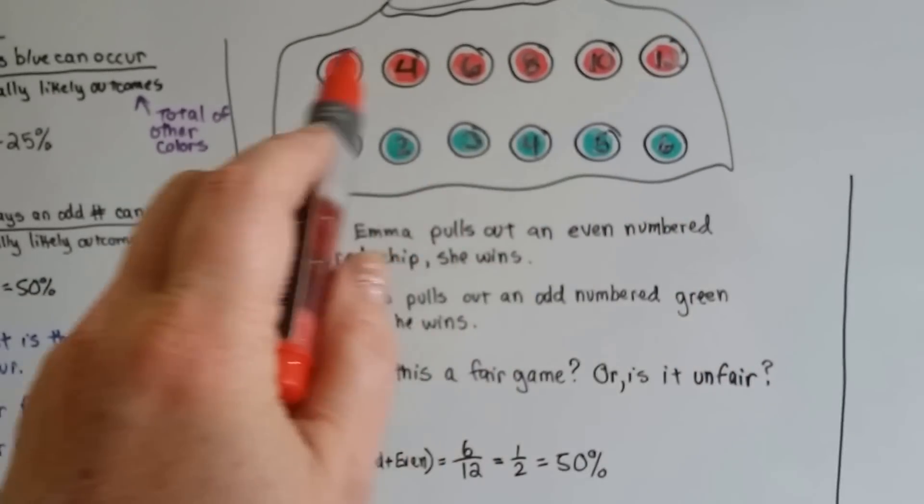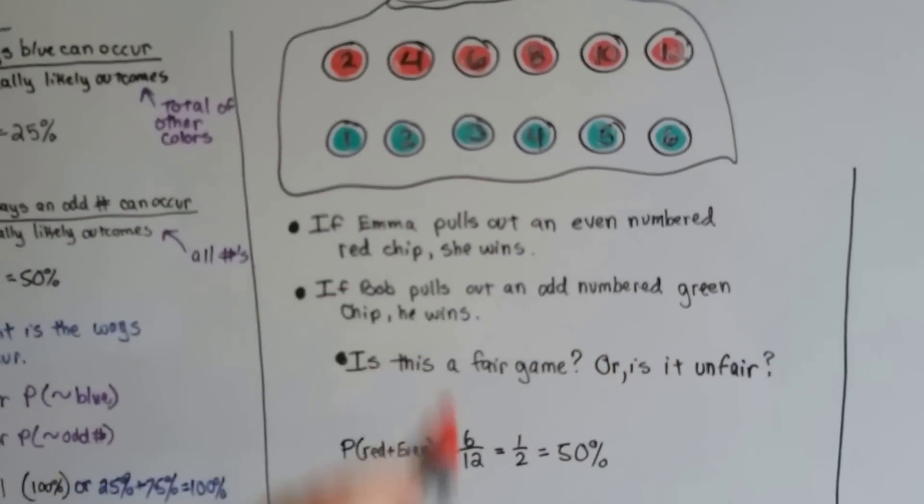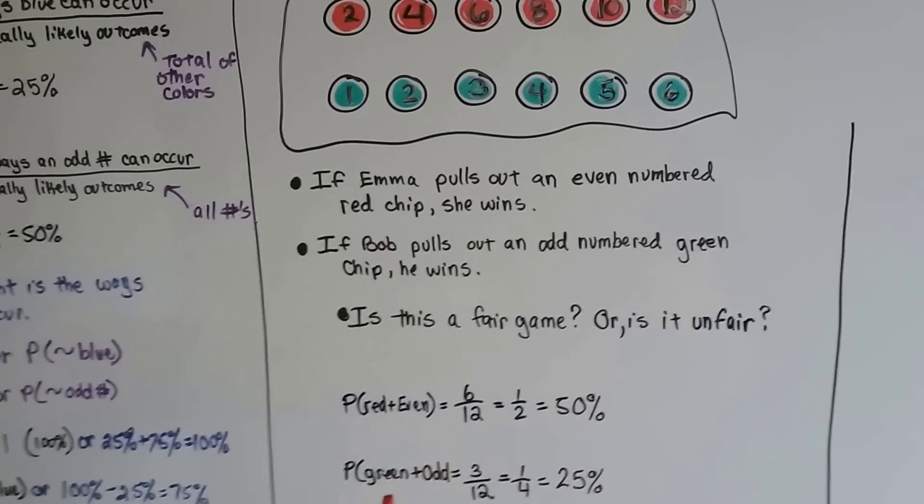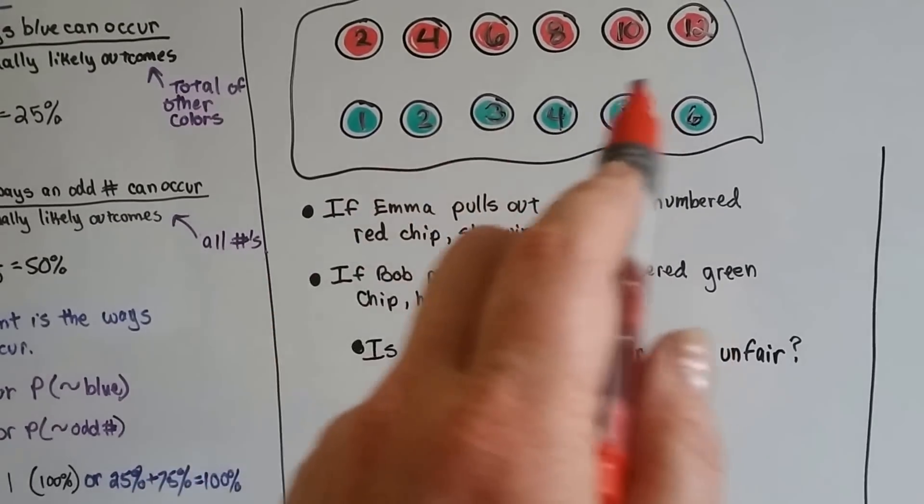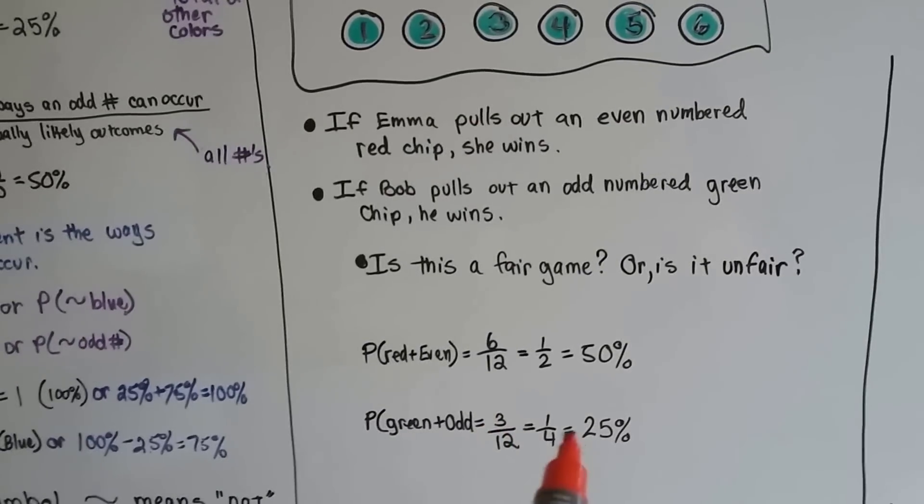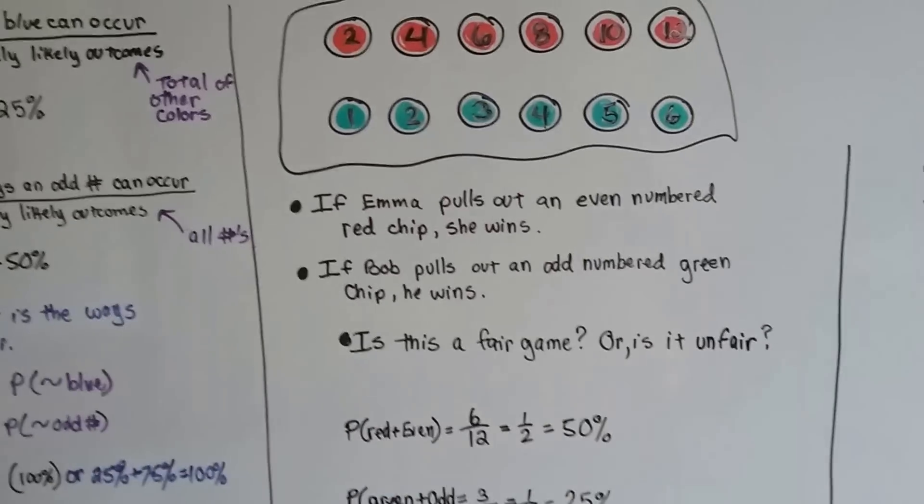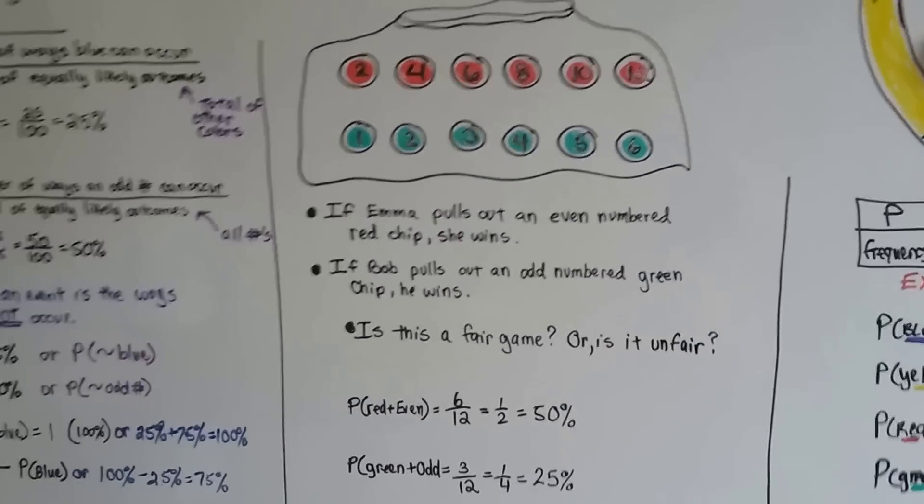So the probability that Emma's going to win is 6 chances out of 12. Because 6 of the red ones are all even out of the 12 chips. So she's got a 50% chance of winning, but poor Bob. The green odd ones, there's only 3 of them out of the 12 chips. He's got a 3 out of 12 chance, or a 1 out of 4 chance, or a 25% chance of winning. So, poor Bob. It's not fair to him, is it?